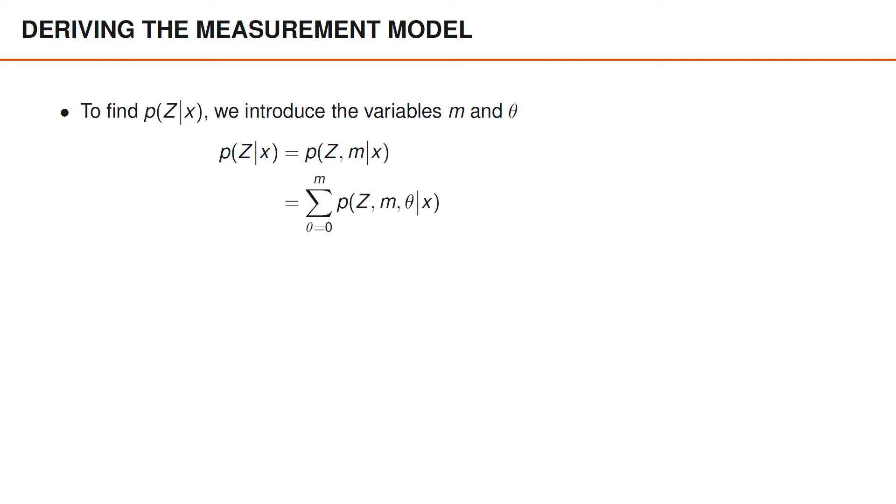As a second step, we use the law of total probability to introduce theta. In this case, that law tells us that the joint distribution of z and m can be found from the joint distribution of z, m and theta by marginalizing, or summing, over all possible values of theta.